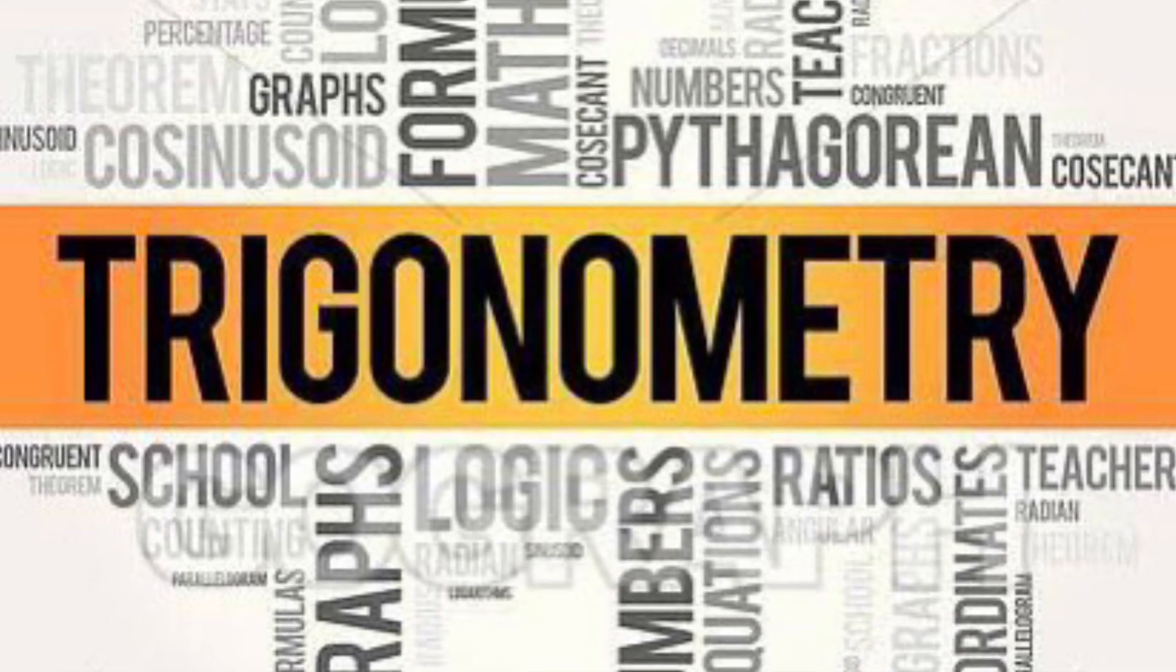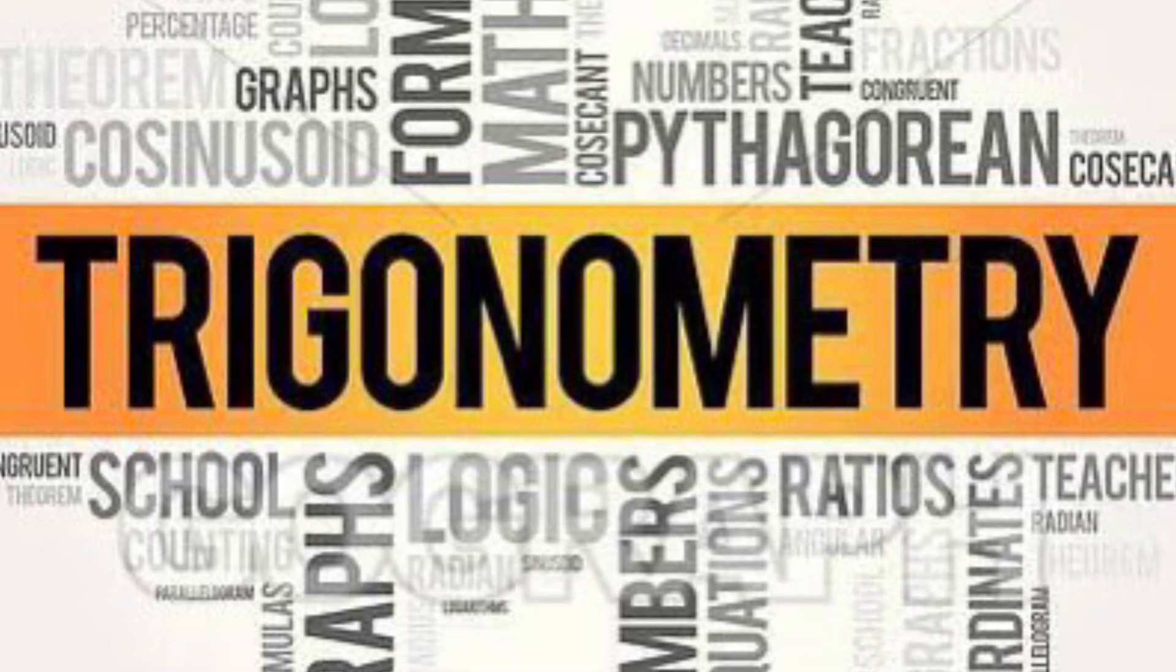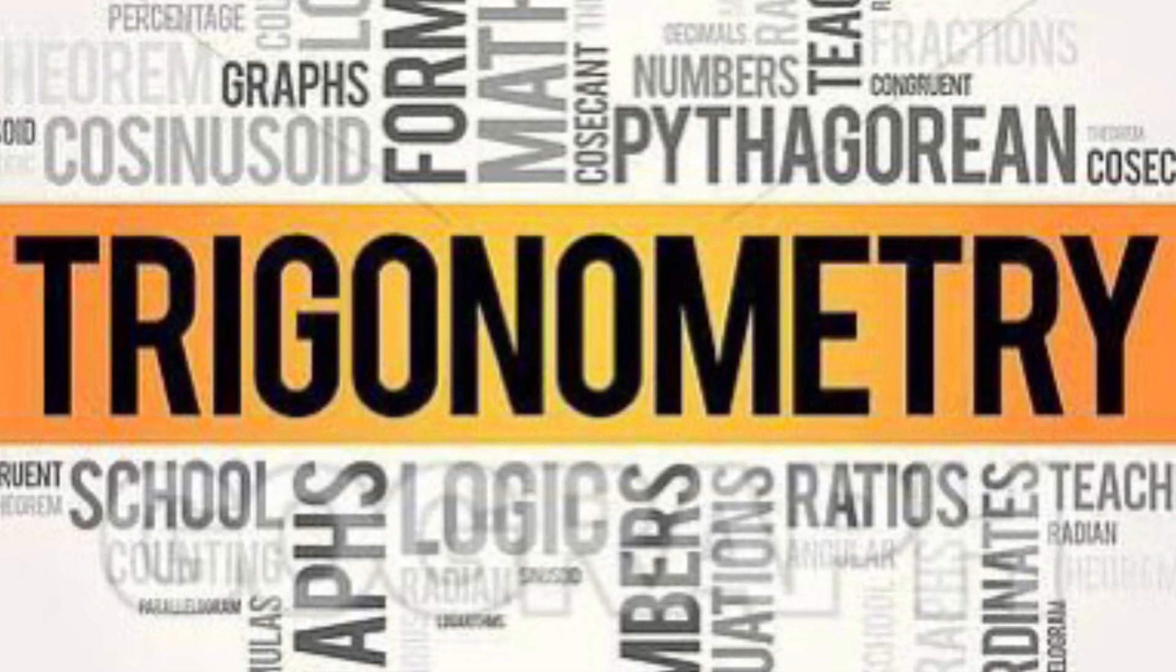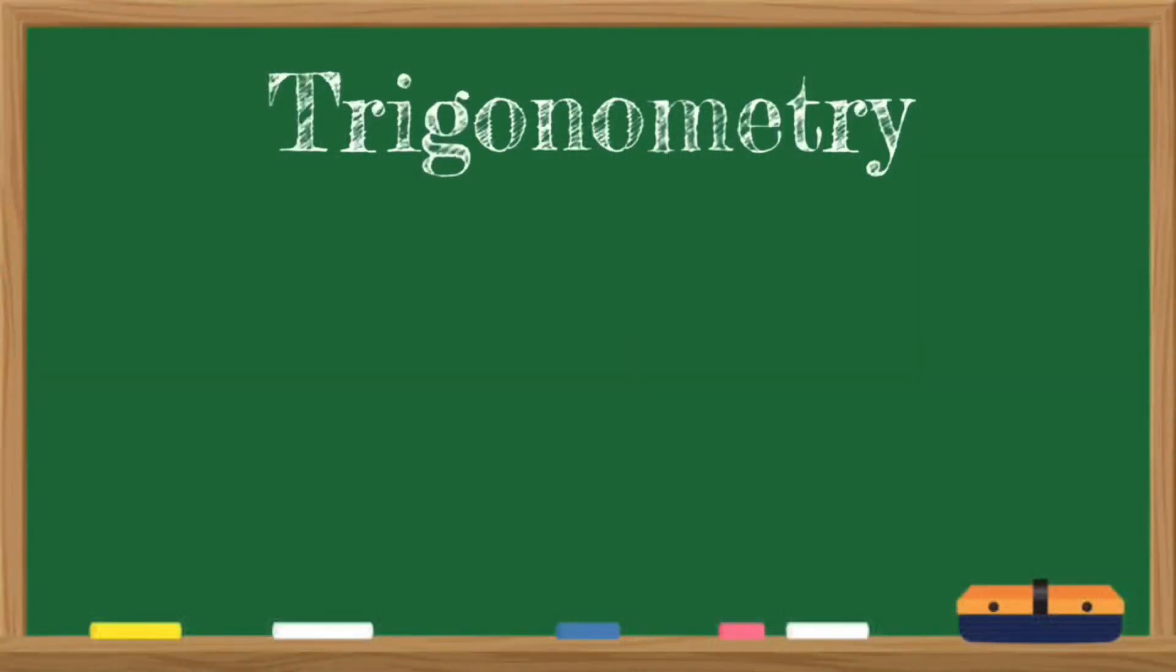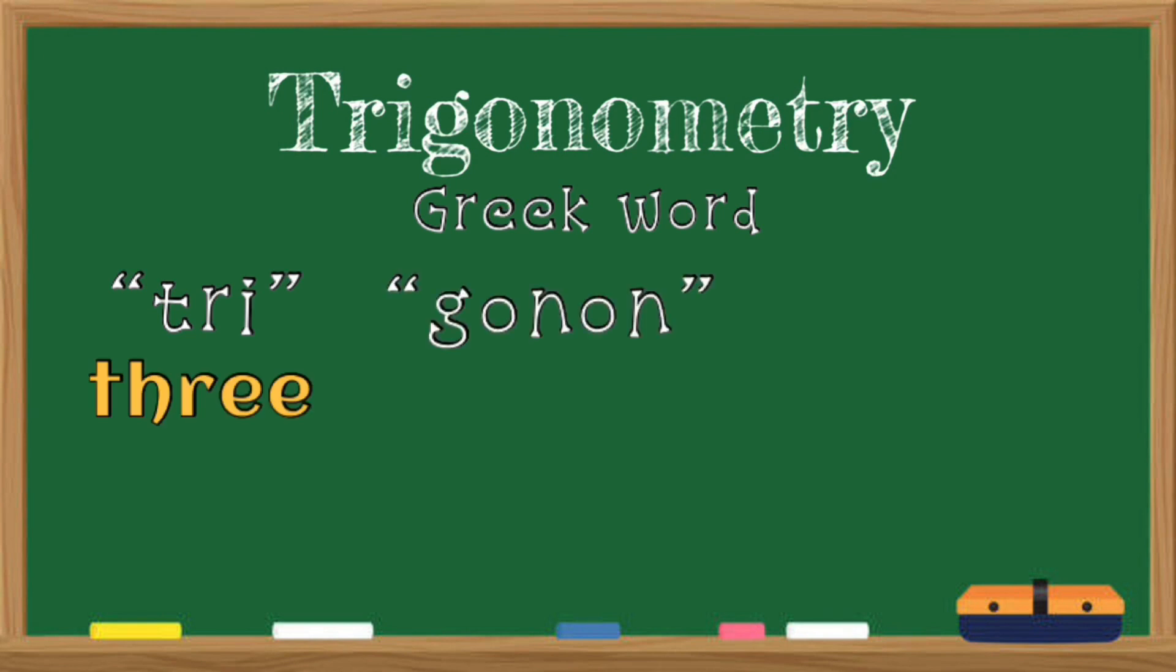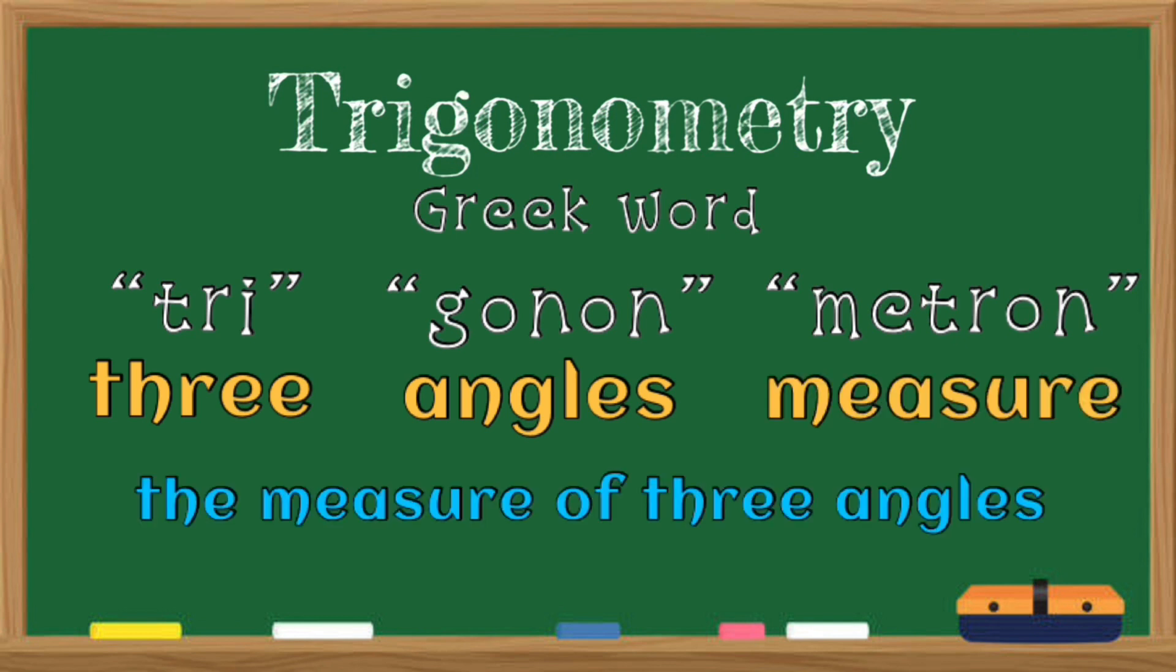Hi everyone, this is teacher Jules and for today's video we're going to learn about the basics of trigonometry. Trigonometry is derived from the Greek words tri which means three, gonon means angles, and metron means measure, meaning the measure of three angles in a right triangle.